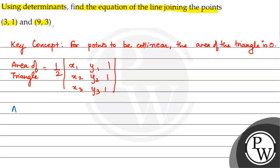Now, let us assign coordinates. Point A has coordinates (3,1). Point B has coordinates (9,3). And now I have a point C which has coordinates (x, y).